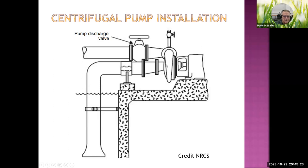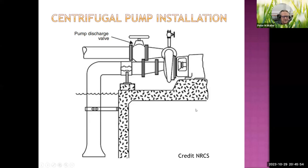If the pump is above the reservoir, a priming pump and priming valve are needed to evacuate air and draw water up into the impeller before starting. Always place the pump below the water level if possible to avoid priming issues and loss of prime. If the pump must sit above the reservoir, you need the priming system. Always start a pump against a closed discharge valve — then slowly open it. Never leave the discharge valve closed more than 30 seconds, as pumps are water-cooled and will overheat.